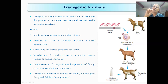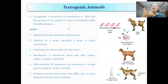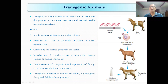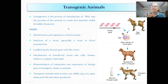The goal is to create and maintain stable heritable characters. A foreign DNA is introduced into an animal so it passes to the next generation — that is a heritable character. Any foreign gene introduced animal is said to be a transgenic animal or genetically modified organism.